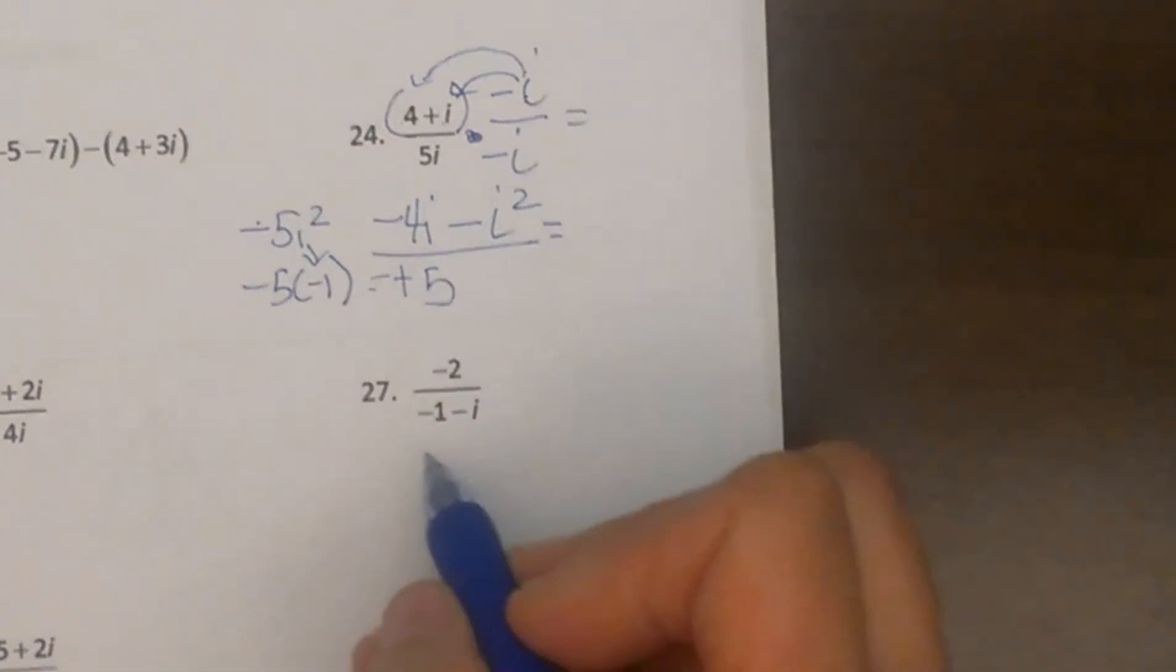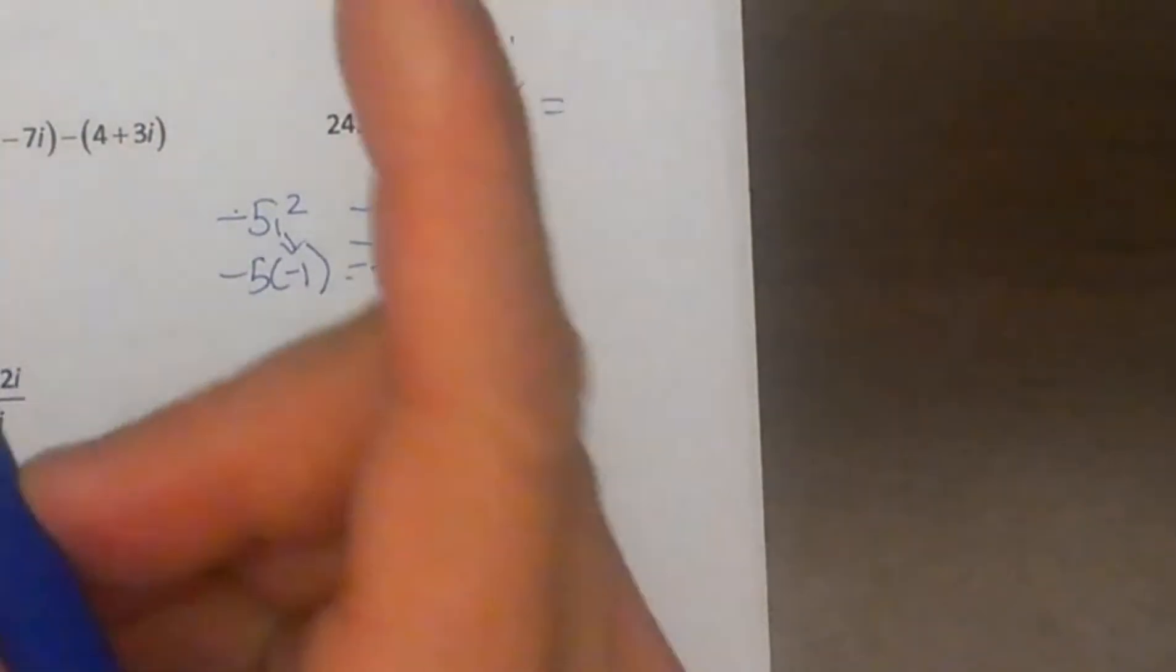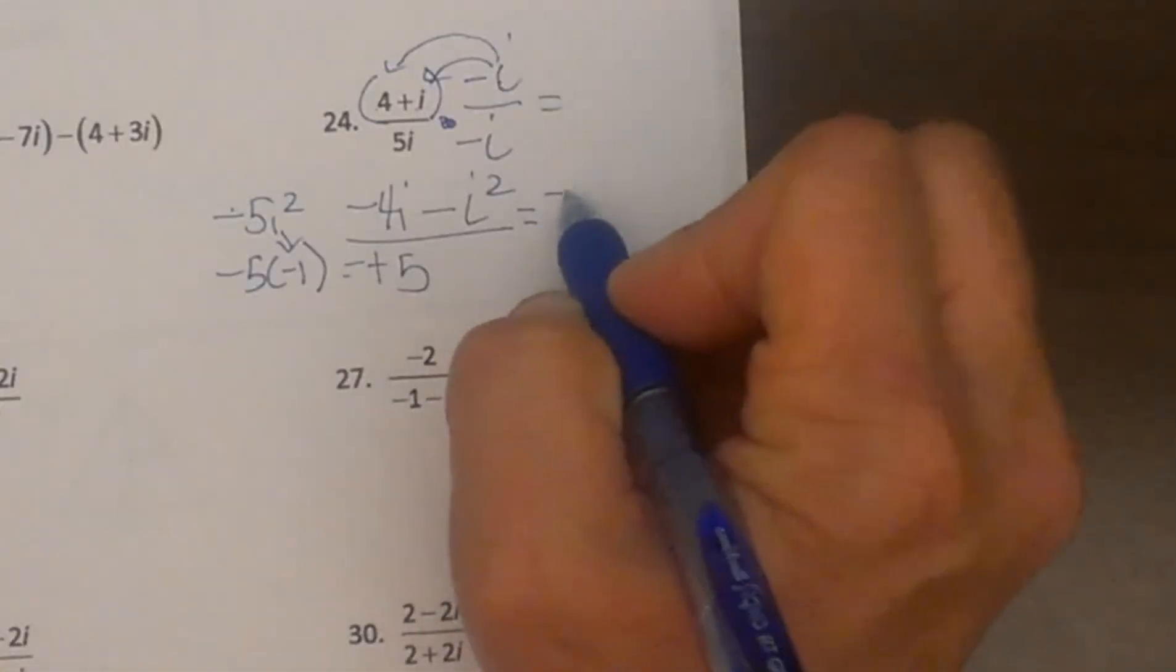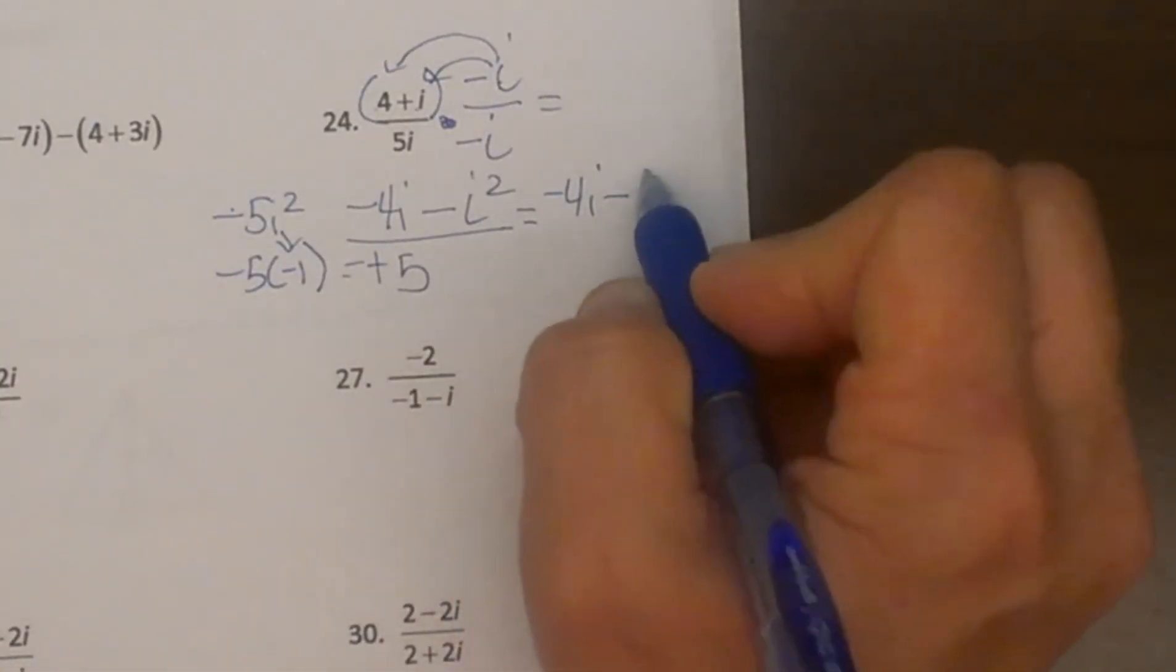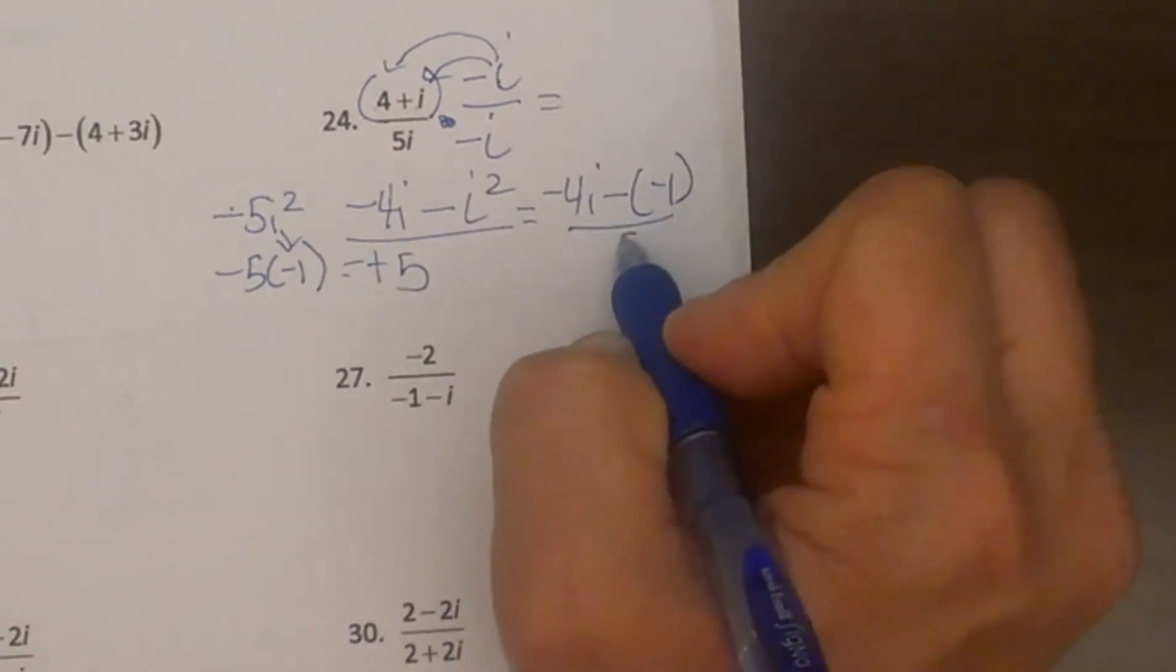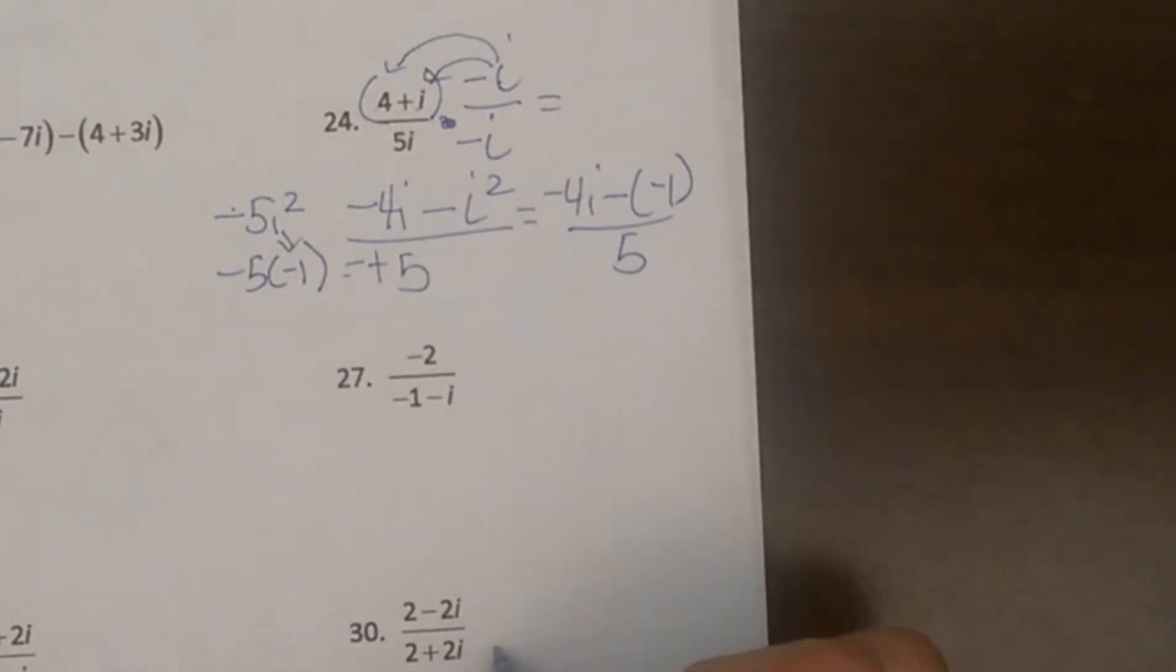Now I have an i squared, so I have to replace it with what? Negative 1. Okay, so I have got negative 4i minus a negative 1, all over 5. We are very close. We just have to clean this up and put it in the a plus bi form.